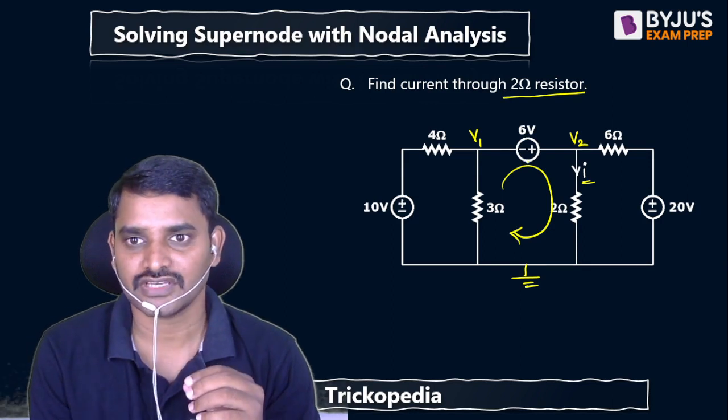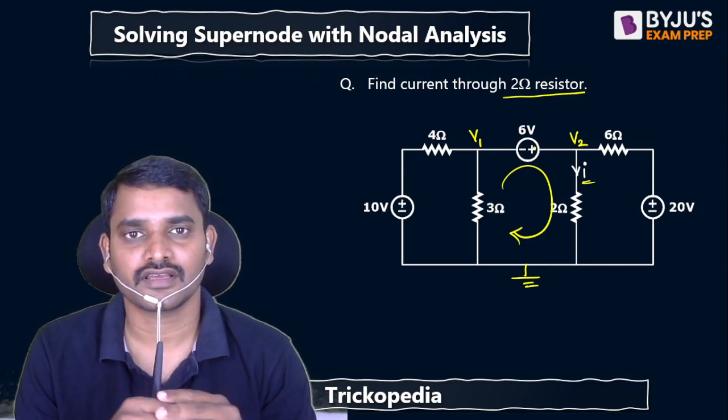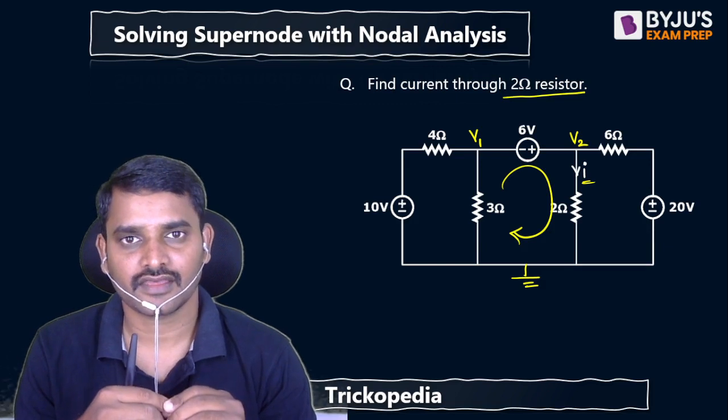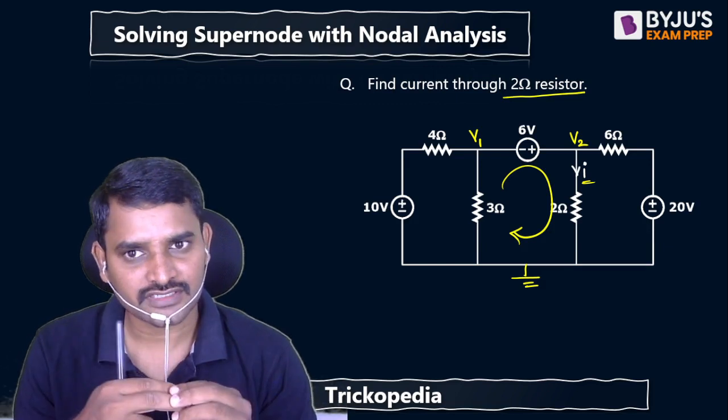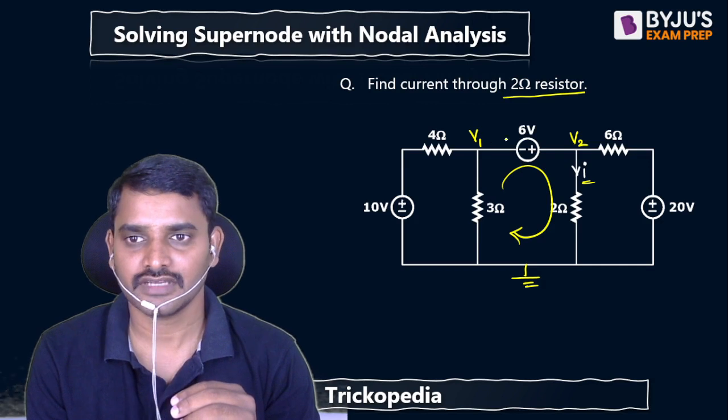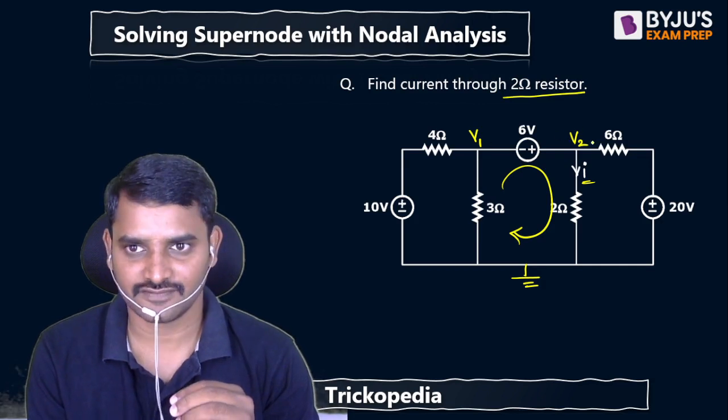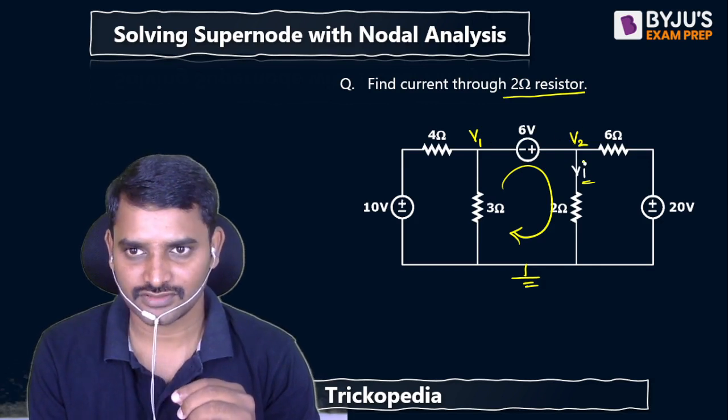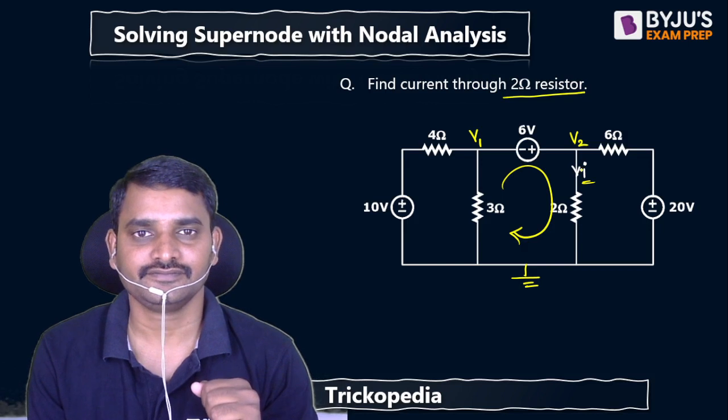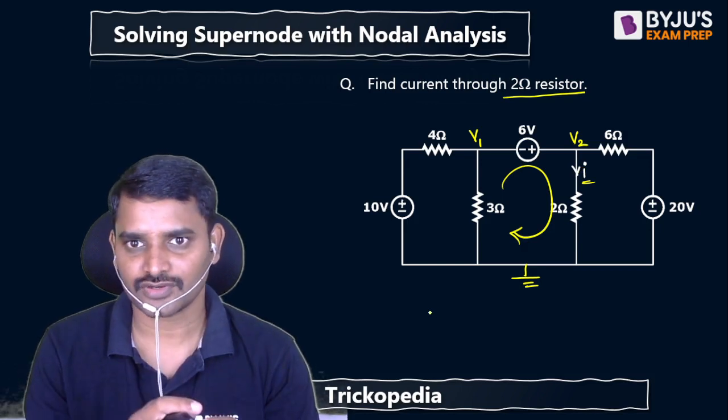So you will get one more nodal equation. By solving those two equations we will get v1 value and v2 value. After getting v2 value you can solve for i - i equals v2 by 2. Let me show you the procedure.